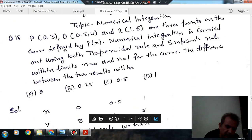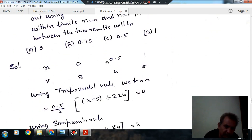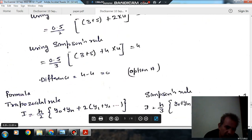So here, when x is 0, y is 3; when x is 0.5, y is 4; and when x is 1, y is 5. So the step size is 0.5. The formula for the trapezoidal rule integration is h/2 times [y₀ + yₙ + 2 times summation of intermediate values].